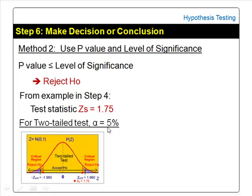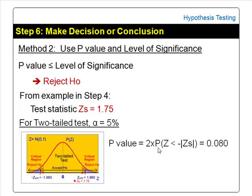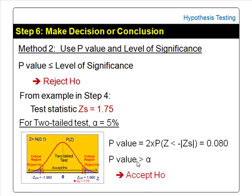For the two-tailed test, alpha of 5% is divided into two parts on both tails (shaded in blue). The p-value was earlier found to be 8% (indicated by the two areas shaded with red lines). Since p-value 8% is greater than alpha 5%, the conclusion is: accept the null hypothesis.